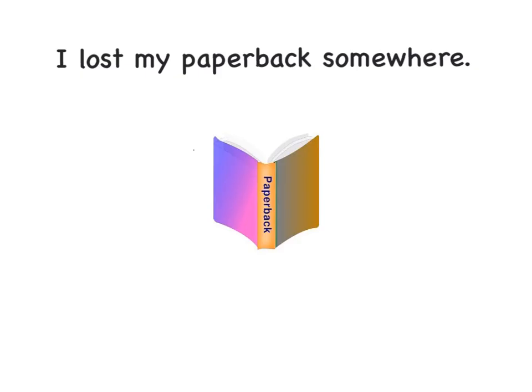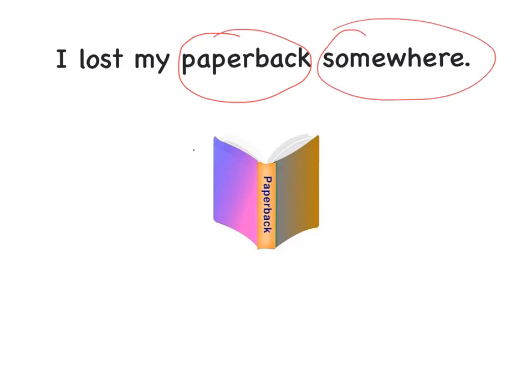Let's first review compound words. Let's read this sentence: I lost my paperback somewhere. Can you find some compound words in this sentence? If you said paperback and somewhere, you are correct. Paperback is made of the two words paper and back, and somewhere is some and where.